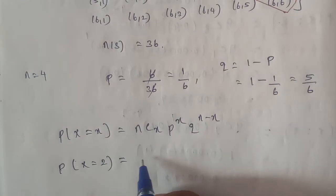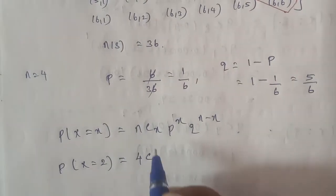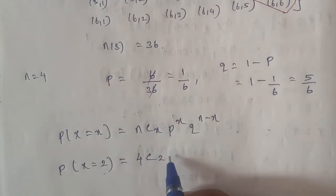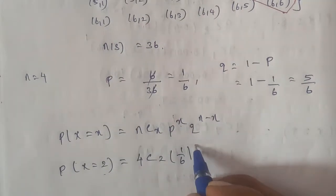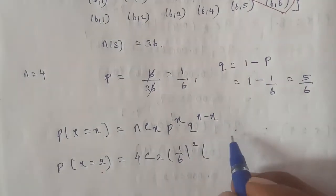Substitute the value of n. Number of times is 4, that is n is equal to 4, C, x with value of 2. 4C2. P is equal to 1 by 6, 1 by 6, to the power of x which is 2. And Q is equal to 5 by 6.